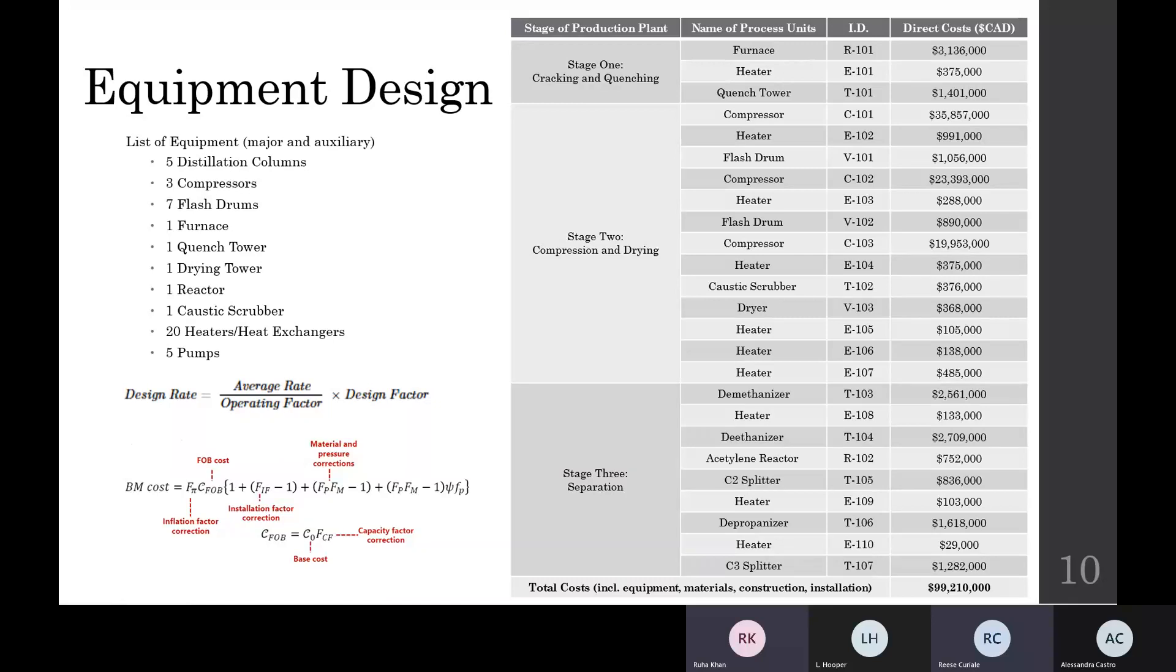The equipment was sized according to the design rate of our production plant, scaling up from the desired average ethylene production rate of 660,000 tons per year. All the equipment costs were calculated using the bare module costing method, using parameters found in the cost estimation tables. Using this costing method, the cost of labor, materials, inspection, piping, instrumentation, installation, utility connections, and building foundations are all accounted for. The total cost for all the equipment was calculated to be approximately $99 million.